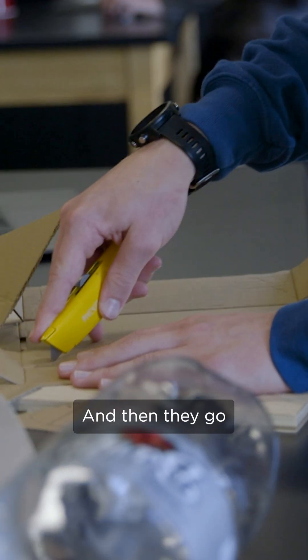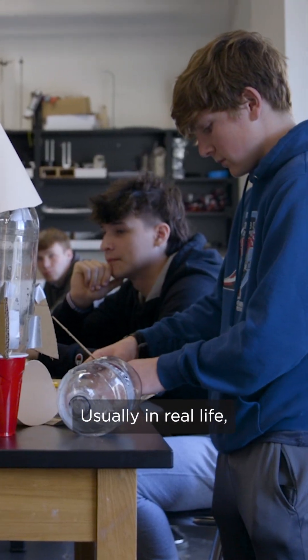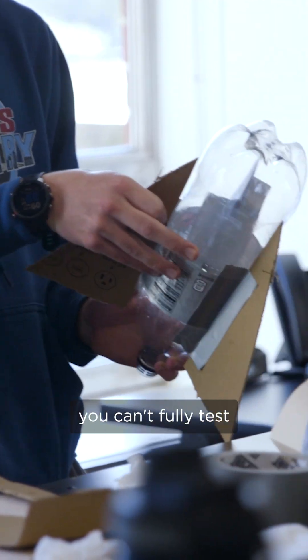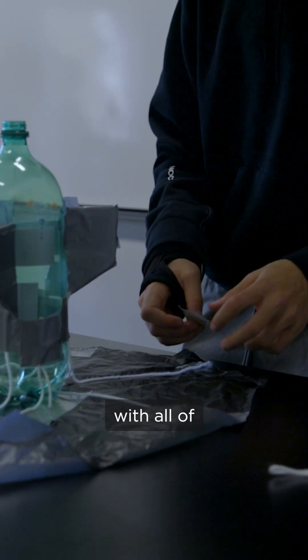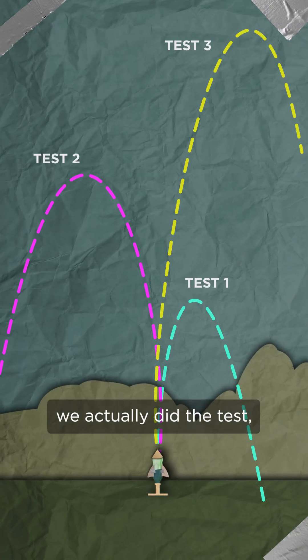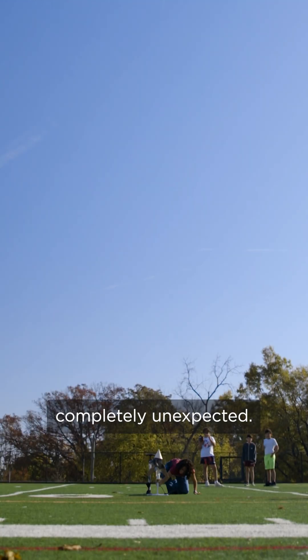They do this several times, and then they go about the build process. Usually in real life when you're building something in an engineering scenario, you can't fully test with all of the constraints. A lot of them were successful with that, and then when we actually did the test, it went completely unexpected.